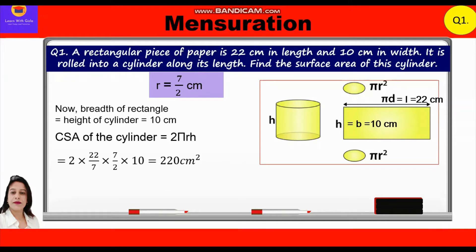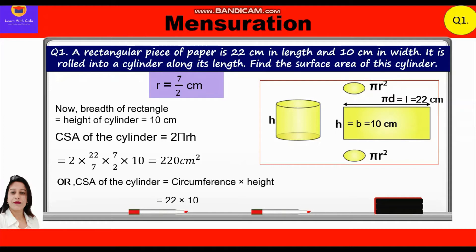Alternatively, the curved surface area equals circumference × height. Substituting: 22 × 10 = 220 centimeters square. Either way — using 2πrh or using circumference × height — we get the same answer. That's how we solve the first question.